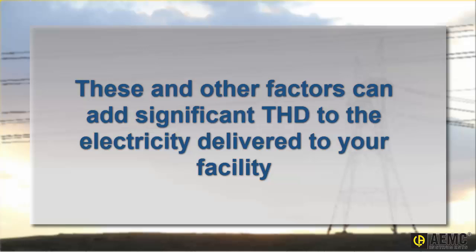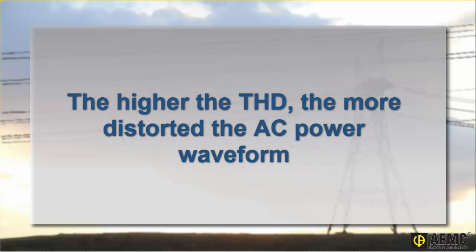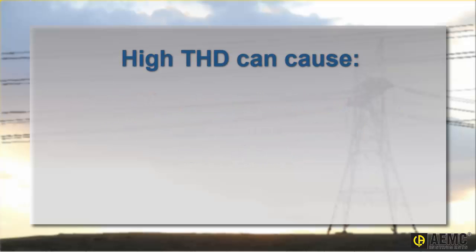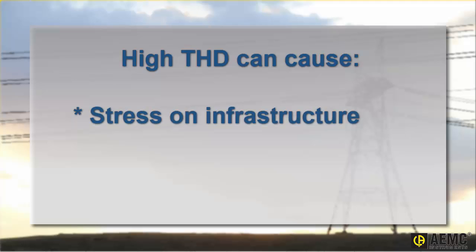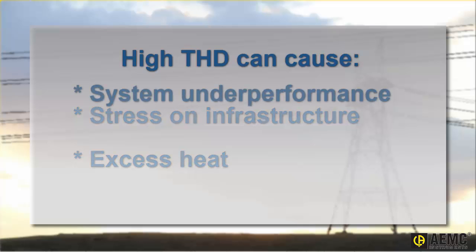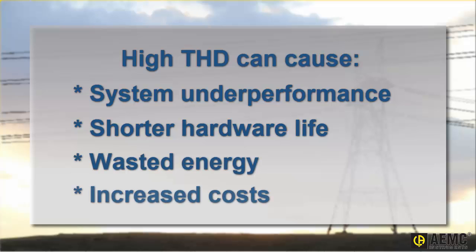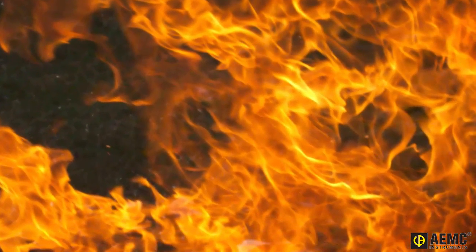In addition to the fundamental sinusoidal electricity produced by the power generation plant, the higher the THD, the more distorted the electricity's waveform. This can be a problem for electrical equipment designed to operate optimally when provided with clean, undistorted AC power. A high percentage of THD can stress electrical infrastructure and equipment, resulting in a significant amount of electricity dissipated as excess heat. Left unaddressed, harmonic distortion can produce numerous issues, such as system underperformance, shortened hardware life, wasted electricity, and increased electrical costs. In extreme cases, THD can increase the risk of personal injury to operators and damage to facilities.